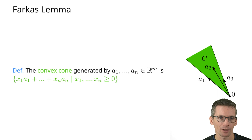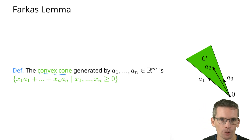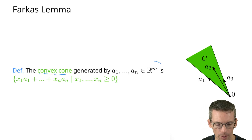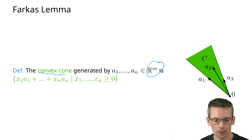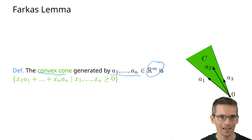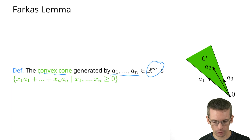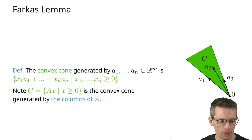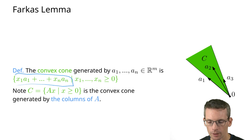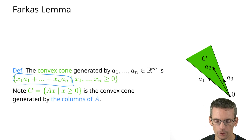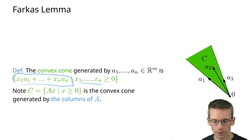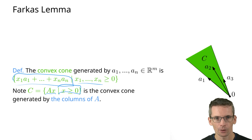So what's Farkas Lemma? Let's first start with some geometric intuition. For that, I will need the concept of a convex cone. So I'm in R to the m, and I have n vectors a_i, and the convex cone spanned by these vectors C is simply any linear combination with non-negative coefficients. And we can also write this as Ax, x greater than or equal to 0, and you might already see how this is connected to linear programming.